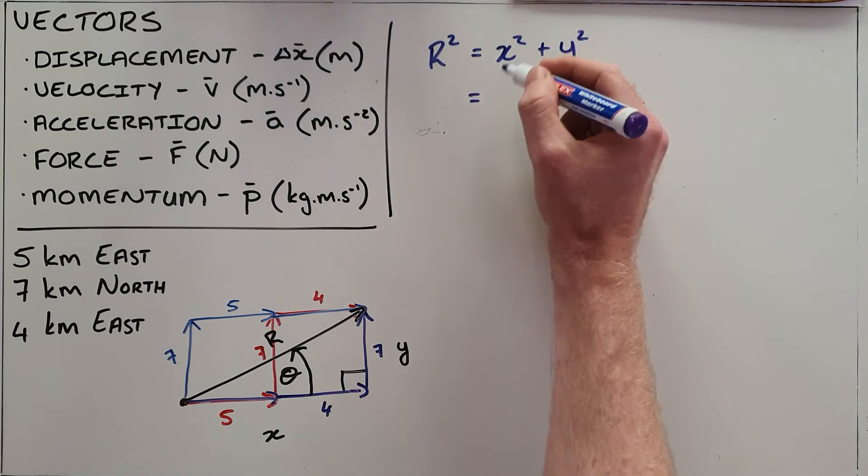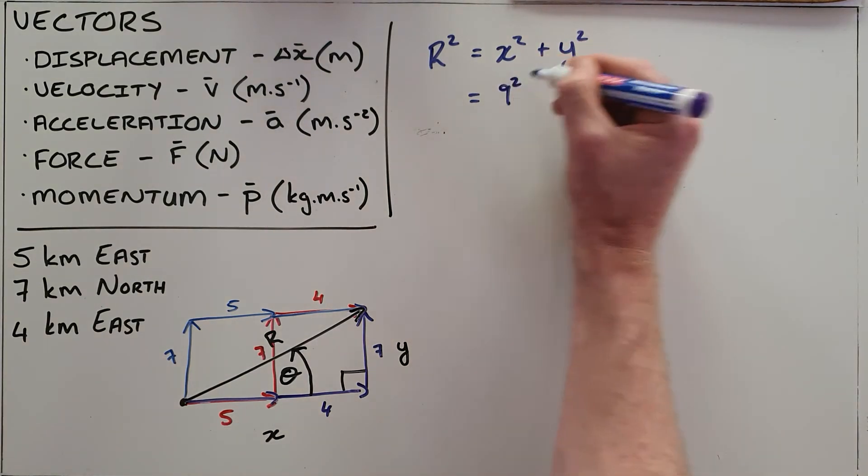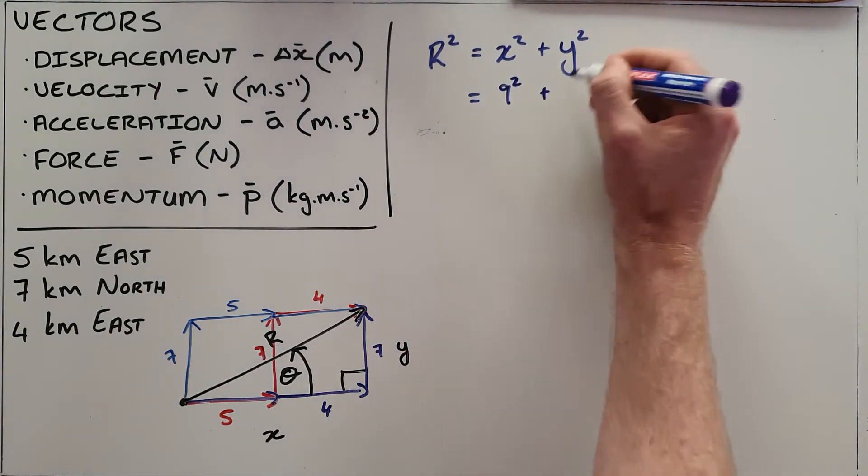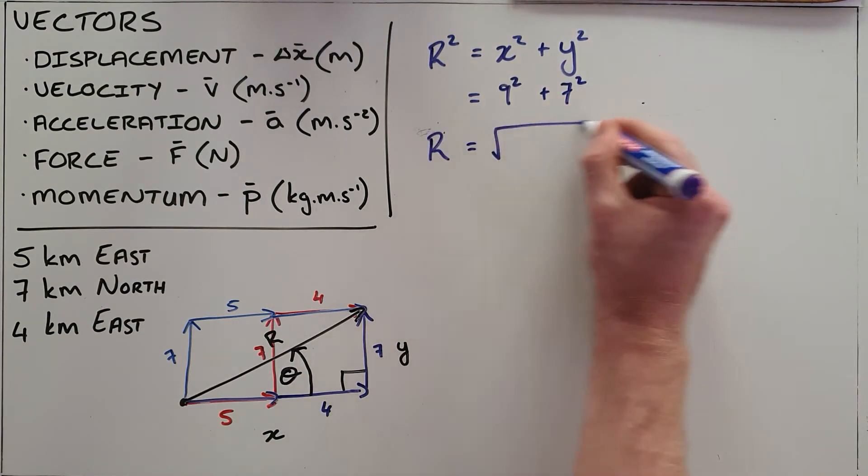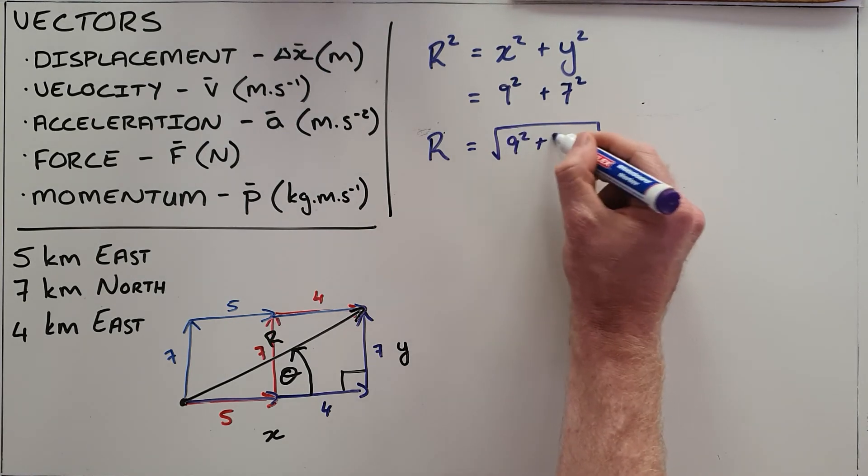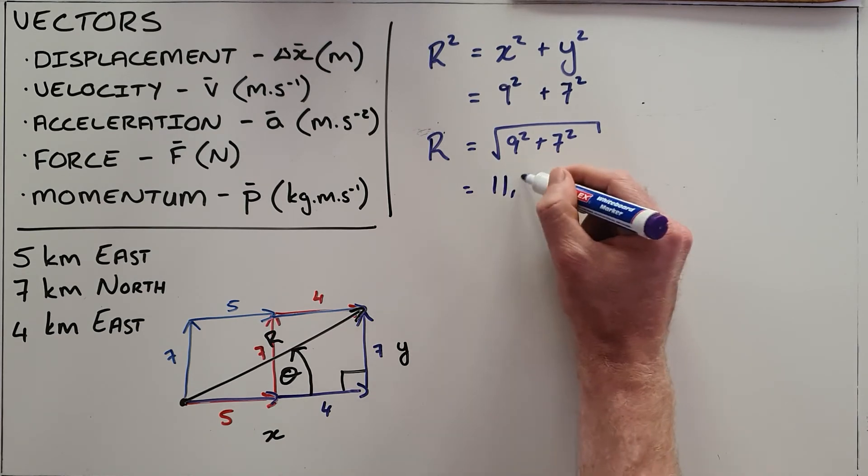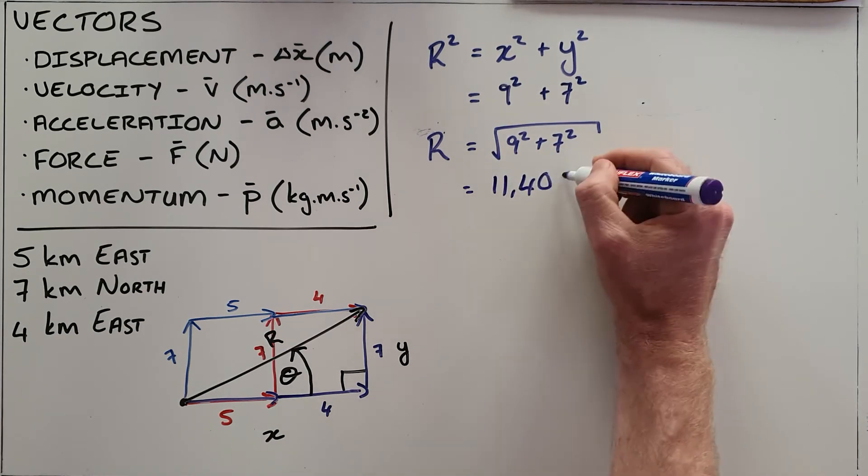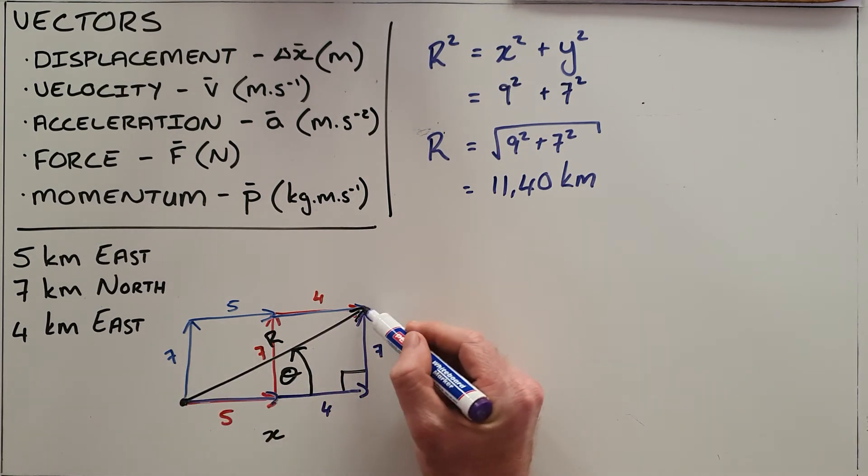In this case, that gets us an answer of the two combined x components 9 squared plus the y component 7 squared, and therefore our resultant is equal to the square root of 9 squared plus 7 squared, which is 11.40 kilometers. So what we are saying is that if this person had traveled 11.40 kilometers from the starting point in this direction, they would have ended in exactly the same place as the person who followed those three vectors.